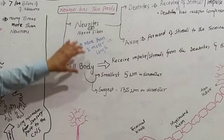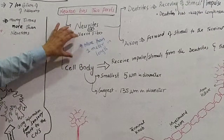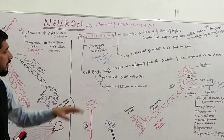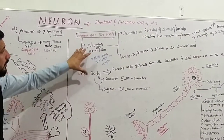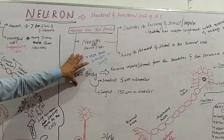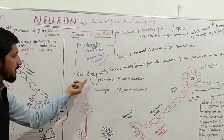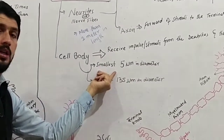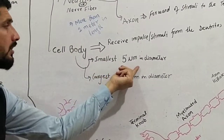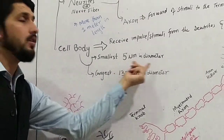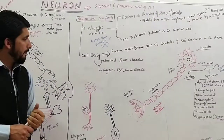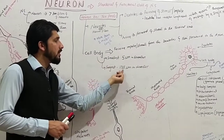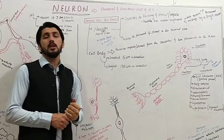What is the difference between the neurite and the cell body? The smallest cell body is 5 micrometres, and the largest cell body is 135 micrometres.